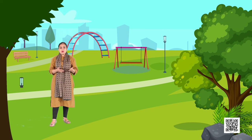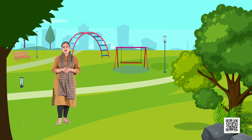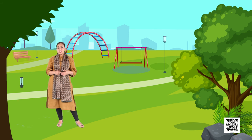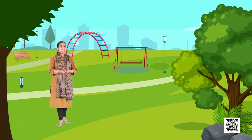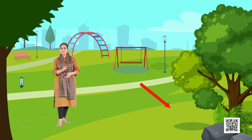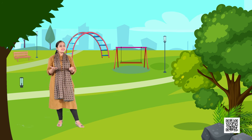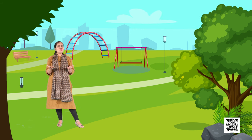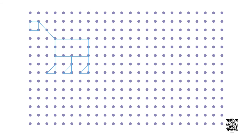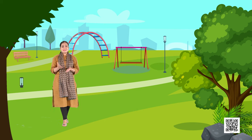Hey kids, you found those missing lines real quick! Did you know that we can actually create lines by joining the dots? We can create a straight line, a vertical line, a horizontal line, and slanting lines. We can actually draw beautiful pictures — see the one on your screen. Isn't it amazing?